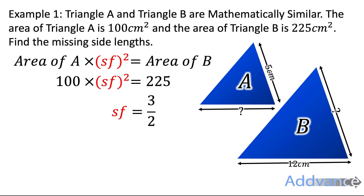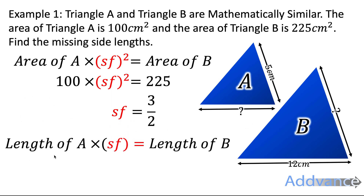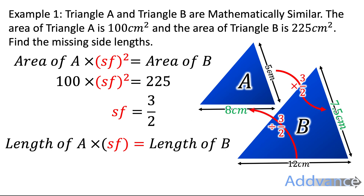Now we know the length scale factor: to go from the smaller length to the bigger length, we multiply by 3 over 2. Using our length equation, to go from 5 to the bigger length, we times by 3 over 2. But to find the smaller length from 12, we go the opposite way and divide by 3 over 2. So 5 times 3 over 2 is 7.5, and 12 divided by 3 over 2 is 8 centimetres. And that's how we find the missing lengths.